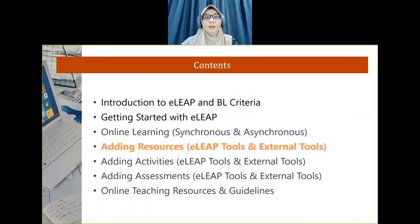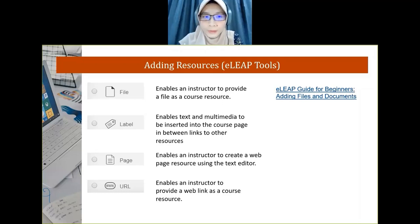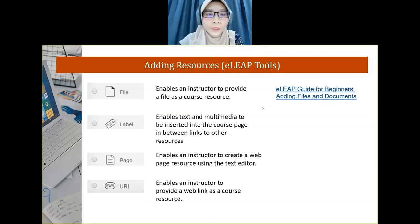Now we're going to adding resources: ELIP tools and external tools. There are many types of resources available in ELIP, but the easy ones are: file, label, page, and URL. There's also a guideline link on how to add files and documents. I'll show you in my ELIP how to add files and documents.